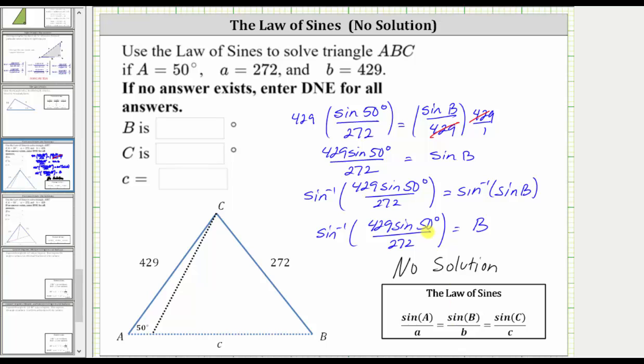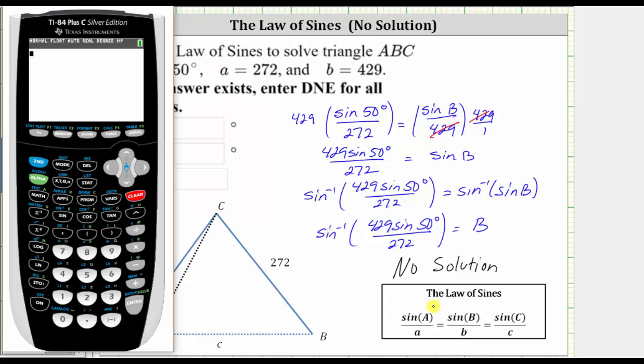Just to verify this, let's go ahead and find the value of this quotient. Let's clear this and enter in parentheses 429 sine 50 degrees, and then divided by 272, enter. Notice how the value is greater than one, and there is no angle that has a sine function value greater than one, which again is the reason why we have no solution.